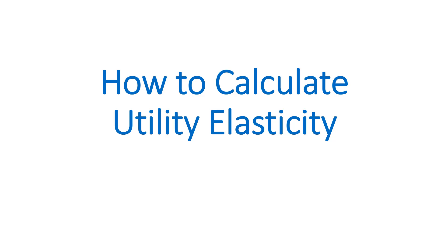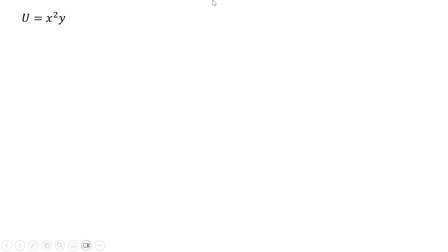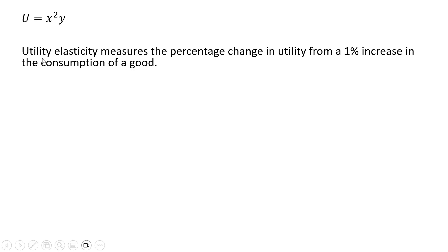Hello, in this video we're going to look at how to calculate utility elasticity. Here is our utility function: u equals x squared times y. Utility elasticity measures the percentage change in utility from a 1% increase in the consumption of a good.